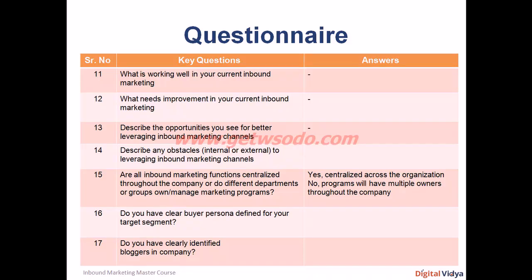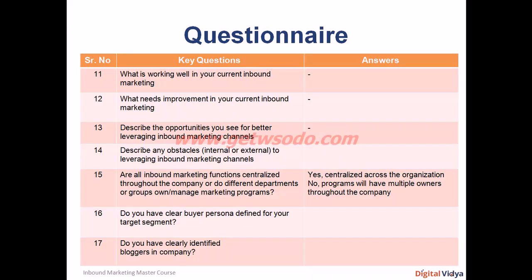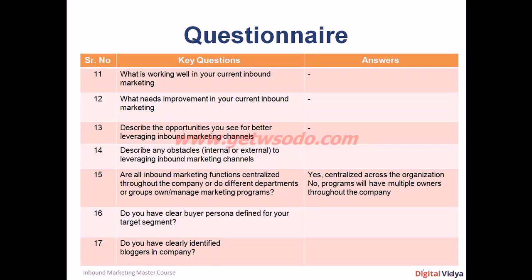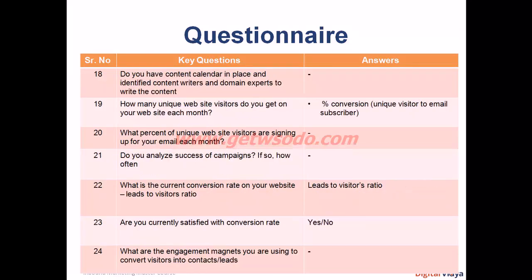Question 16: does the organization have clearly defined buyer personas? Have they been identified, documented, and how often are they refreshed? Question 17: does the organization have clearly identified bloggers? If you're mandated to run a company blog, you need to identify people within the organization who can contribute, orchestrate the blogging process, follow up with contributors, and put the whole blog plan together. Question 18: do you have a content calendar in place with identified content writers and domain experts to help write content? A content calendar is critical and must be constantly updated.